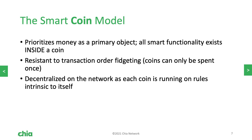Chia instead runs on the smart coin model. This works by having money be the primary object, and each coin contains a program. When you spend a coin, you run the program. This is resistant to transaction order manipulation because coins can only be spent once. It's decentralized because people aren't interacting with one smart contract — they're interacting with their own local coins, and applications are built with this more decentralized approach.